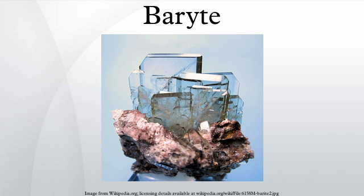Barite used for drilling petroleum wells can be black, blue, brown, or gray depending on the ore body. The barite is finely ground so that at least 97% of the material by weight can pass through a 200-mesh screen, and no more than 30% by weight can be less than 6 micrometers in diameter. The ground barite also must be dense enough so that its specific gravity is 4.2 or greater, soft enough to not damage the bearings of a tricone drill bit, chemically inert, and containing no more than 250 mg per kg of soluble alkaline salts.